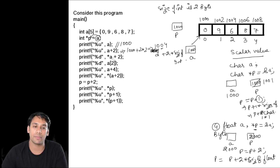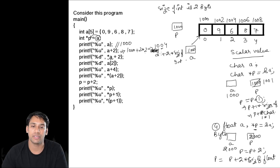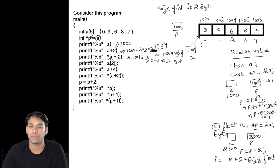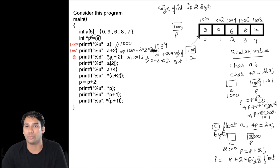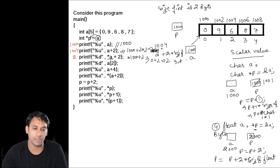In the next statement, we have *A + 2. Here the star is only associated with A, so it means: go to the location pointed by A (which is 1000), get the value stored there (which is 0), and then add 2 — giving 0 + 2 = 2. So this statement prints 2. The statement *(A + 2) prints the value at address 1004, which is 6.